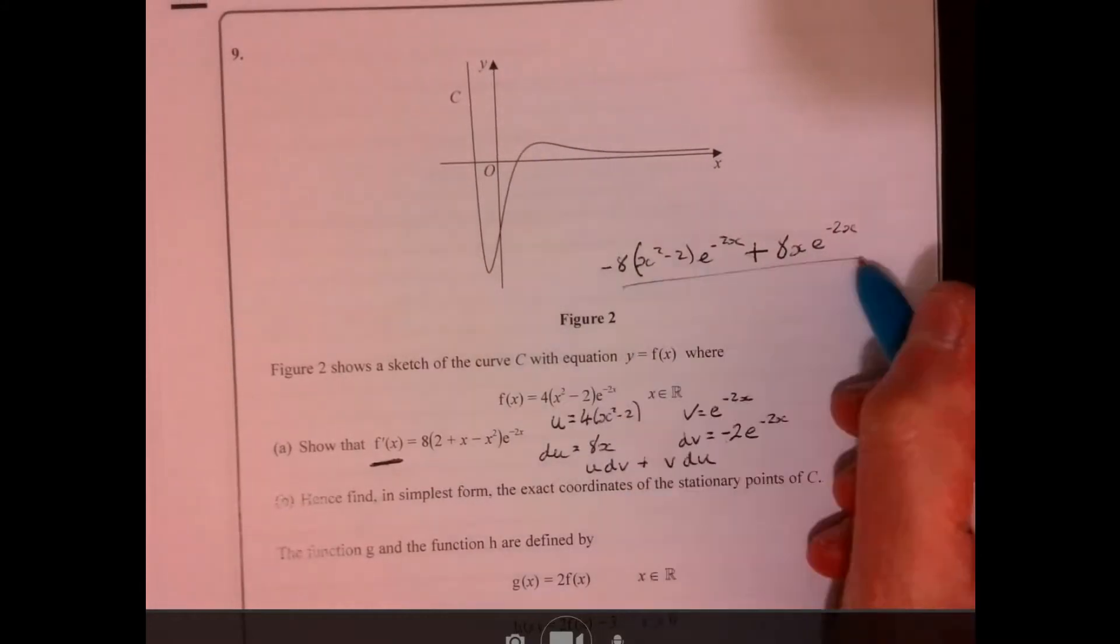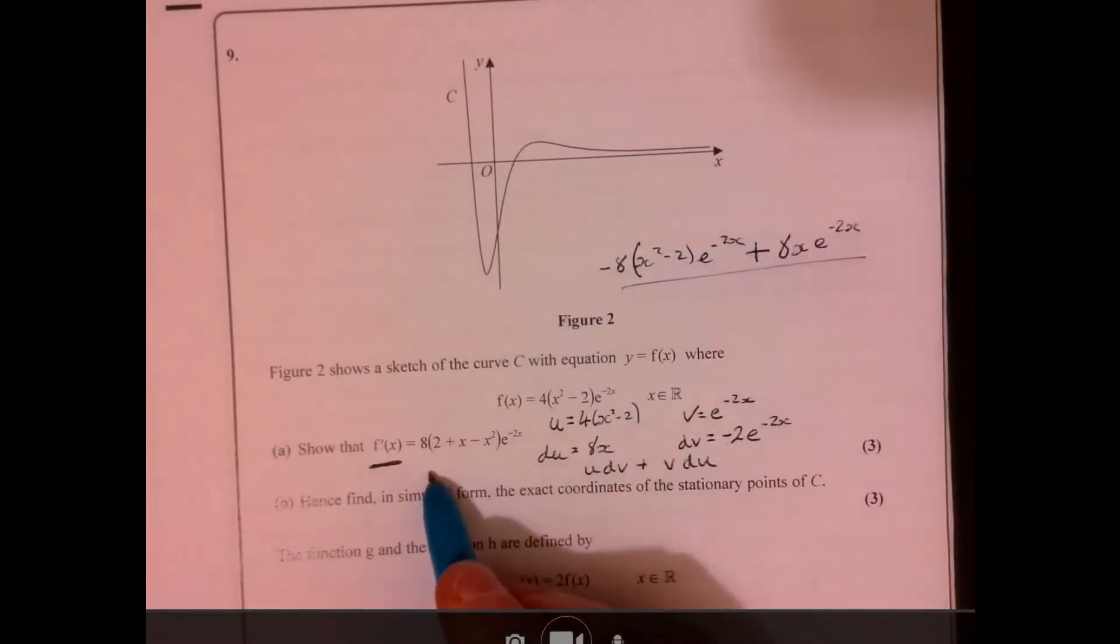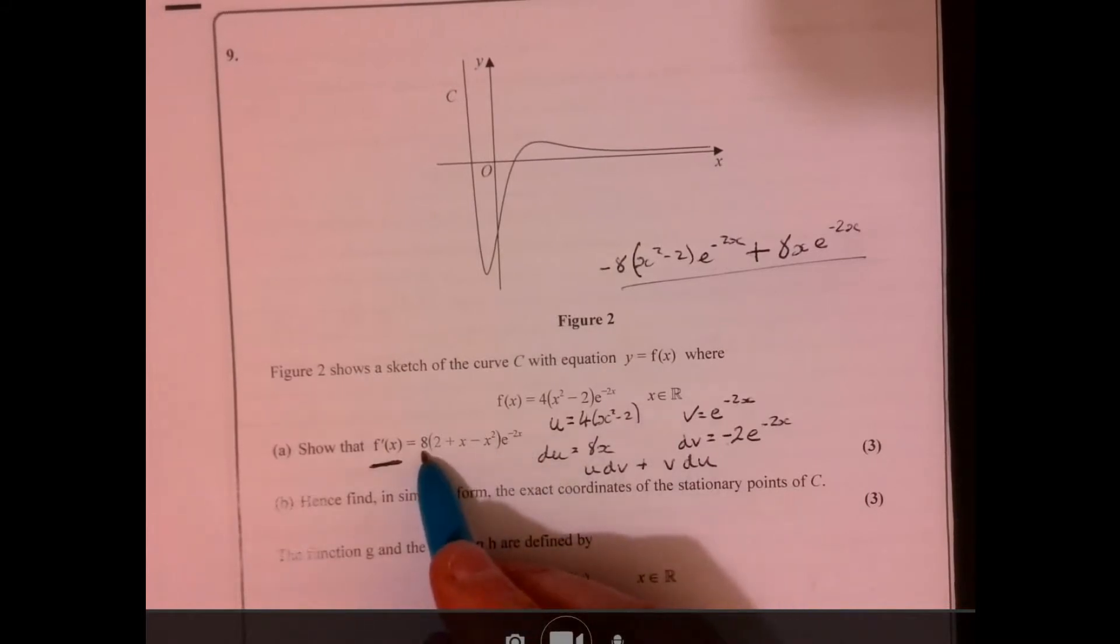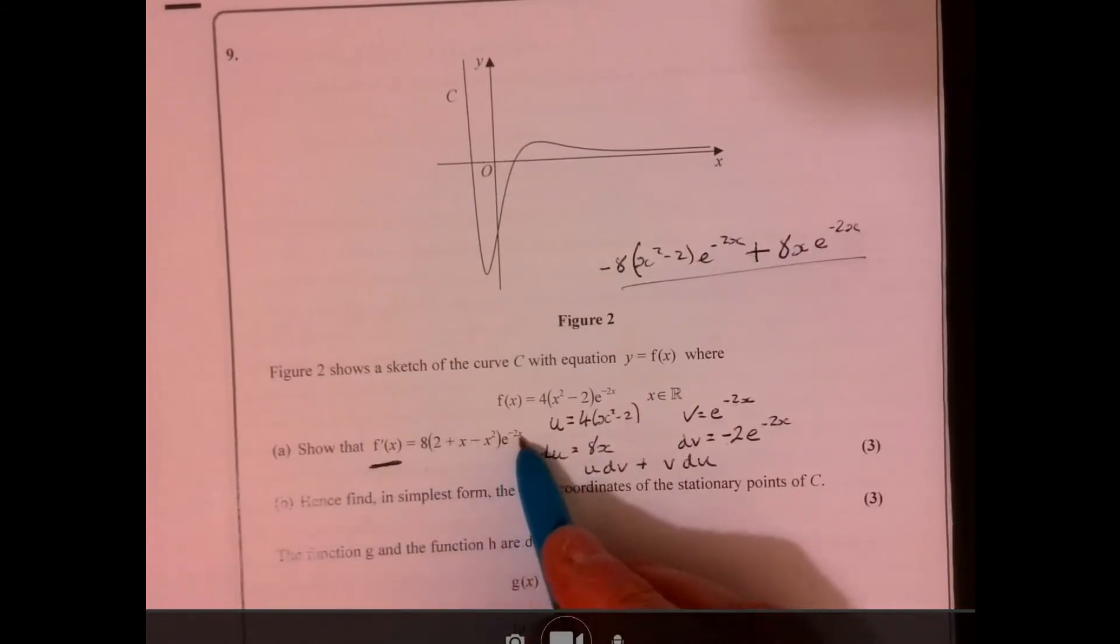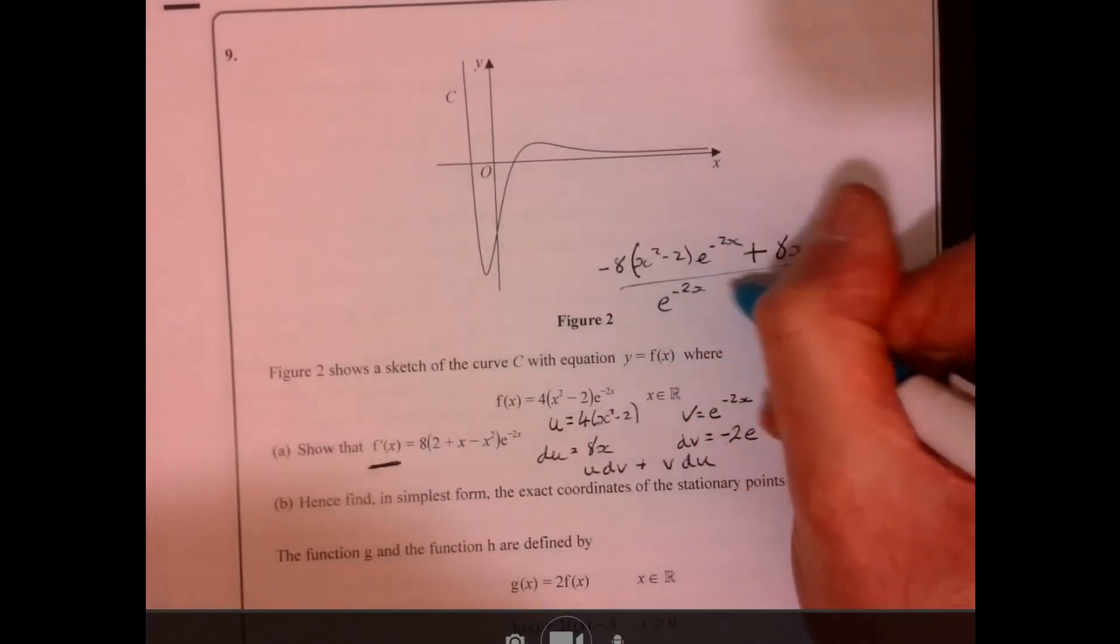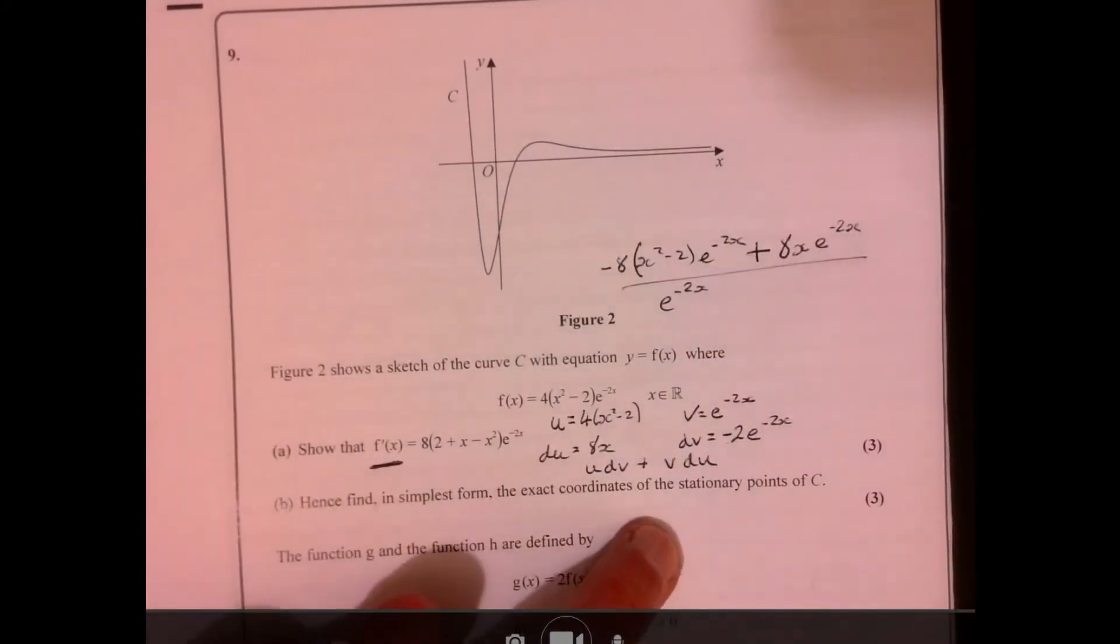Now, that's the answer. But if we have a look, we need to get it into this form here. So basically, they've taken out a factor of 8 and they've taken out e to the minus 2x. So if we do e to the minus 2x first, and then just see what you're left with.